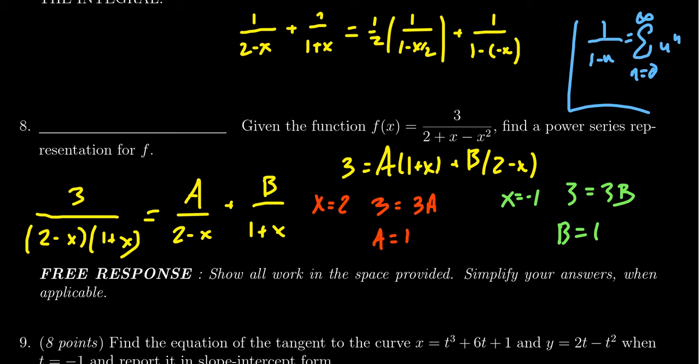So the first one will be written as 1 half the sum, where n goes from 0 to infinity, and then here we're going to get x over 2 to the n. That's our first piece. And then for the second one, we get the sum, where n equals 0 to infinity of negative x to the n, like so.